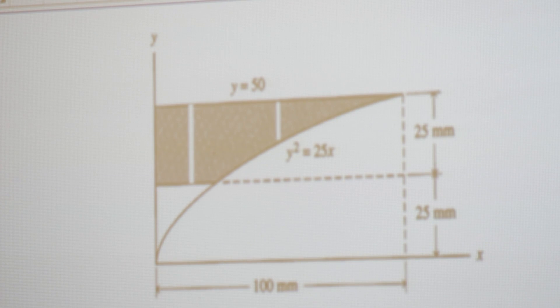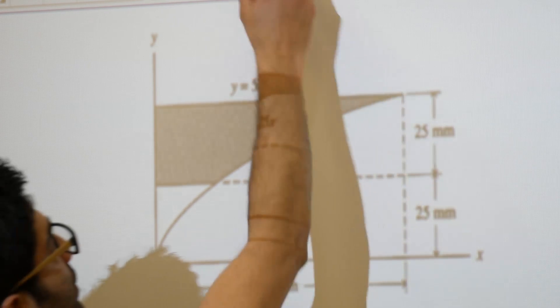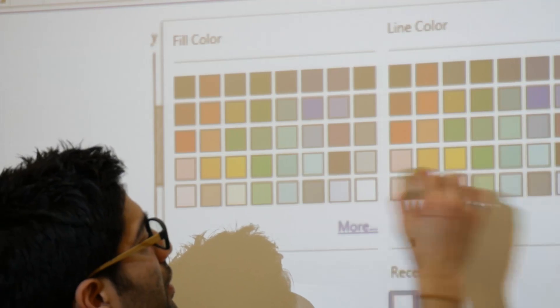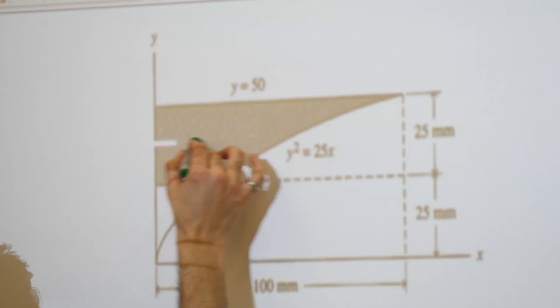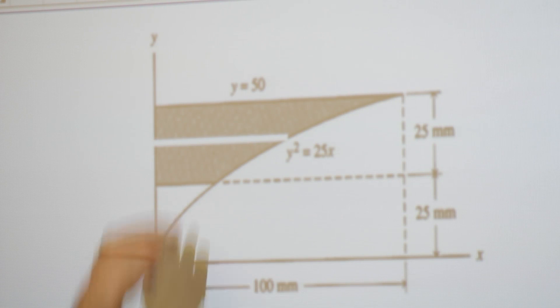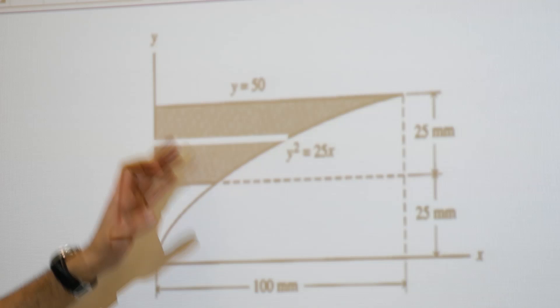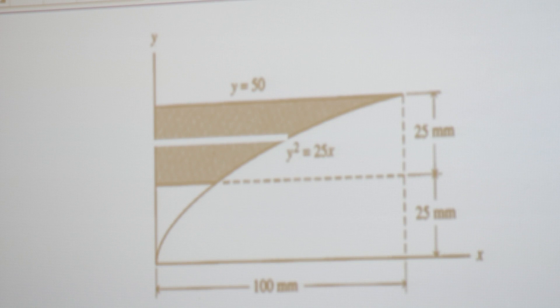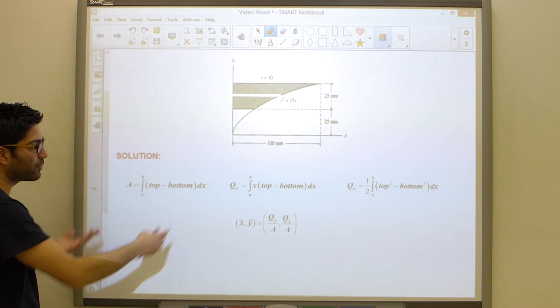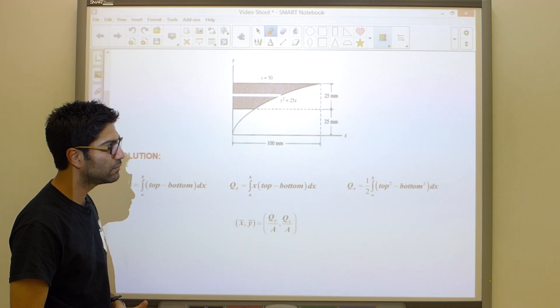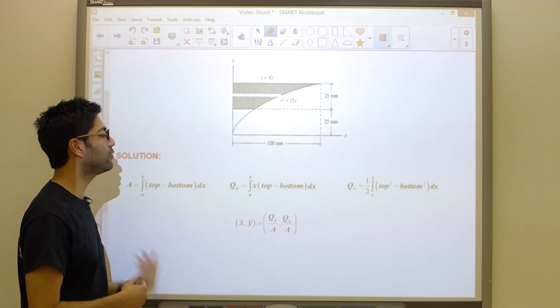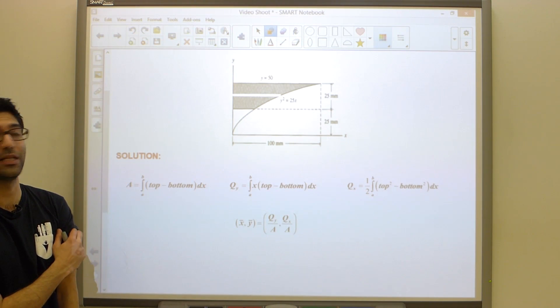Instead of considering the top and bottom, why don't we rather consider left and right? Because no matter where I am in the shaded region, on the right side I always touch the parabola and on the left side I always touch this guy. Let's take a look.